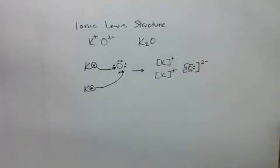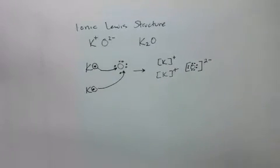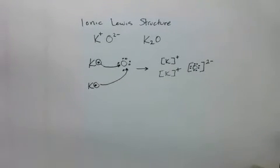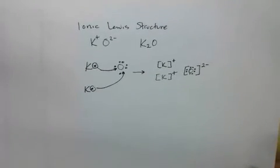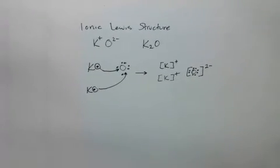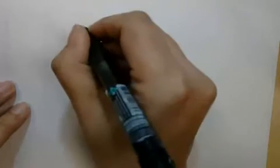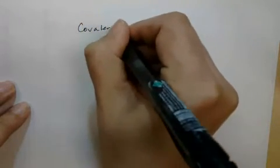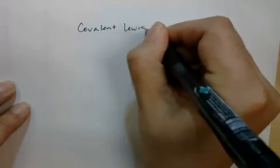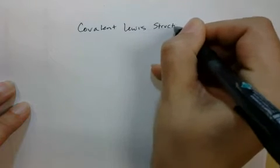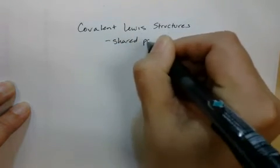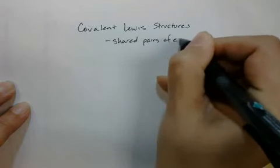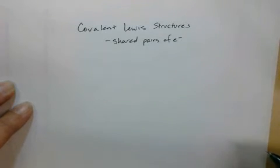For covalent molecules, we do not have charge on a neutral covalent molecule. So we're not moving an electron from one atom to the other — we're sharing an electron between them. When working with a covalent Lewis structure, I'm looking to make shared pairs of electrons between elements.